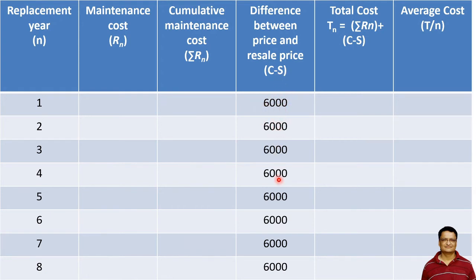Then we have the total cost, which is equal to the cumulative maintenance cost plus the difference between price and resale price that we have calculated. The average cost will be equal to this total cost divided by the number of years for which we have been using that machine. Let us calculate the values in this table.